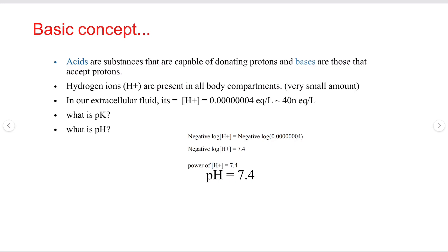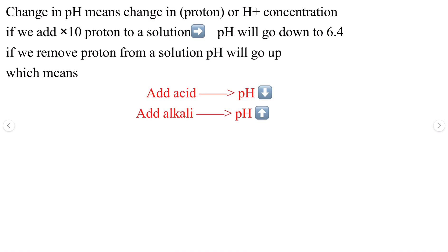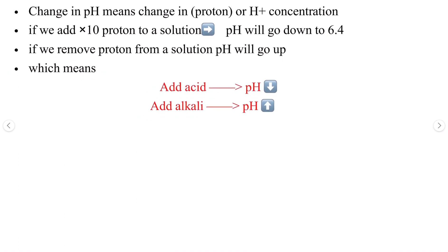What is pH? pH is the negative log of the hydrogen ion concentration. If we take the negative log of the hydrogen ion value in extracellular fluid and calculate it, that is going to be 7.4. The negative log of hydrogen ion concentration is called the power of hydrogen, and we write it as pH, which equals 7.4.